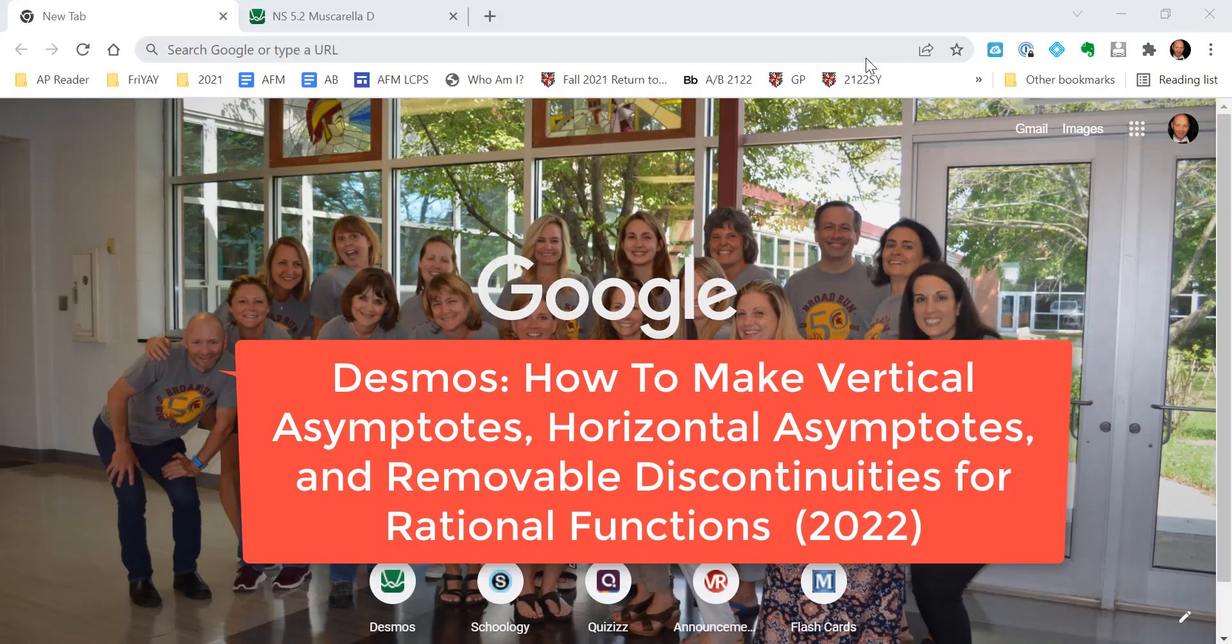All right, what's going on, everybody? This is Mr. Muscarella coming at you. In this video, I'm going to show you how to make vertical asymptotes, horizontal asymptotes, and removable discontinuities, otherwise known as holes, using the Desmos graphing calculator.